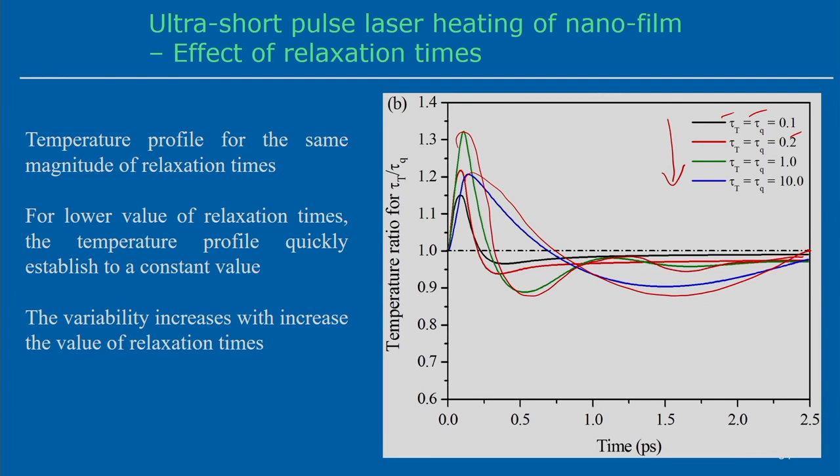Variability increases with increasing values of relaxation time, as observed from the numerical model developed for the non-Fourier heat conduction analysis. The relaxation parameter must be chosen very carefully because experimentally it is very difficult to measure. Sometimes we depend on this analysis or estimate it from other parameters, but it is very sensitive to the model results.